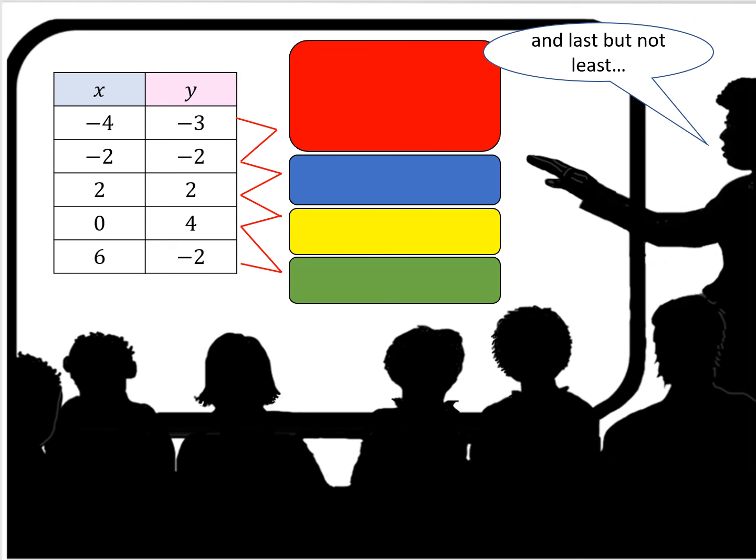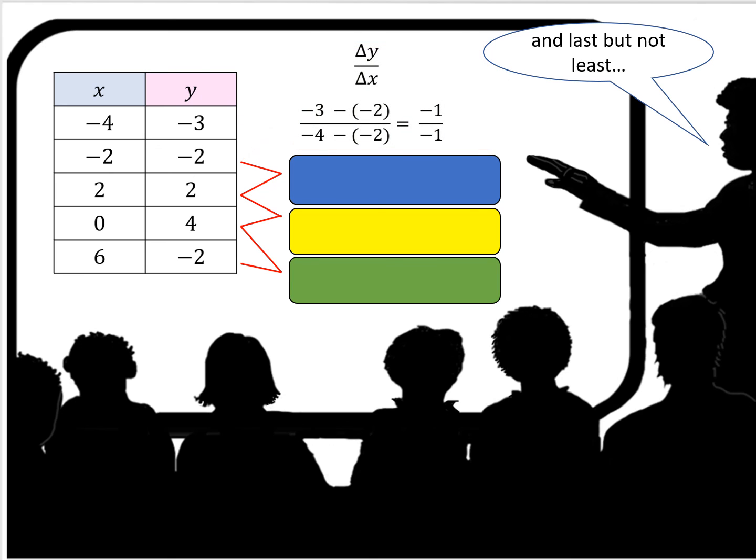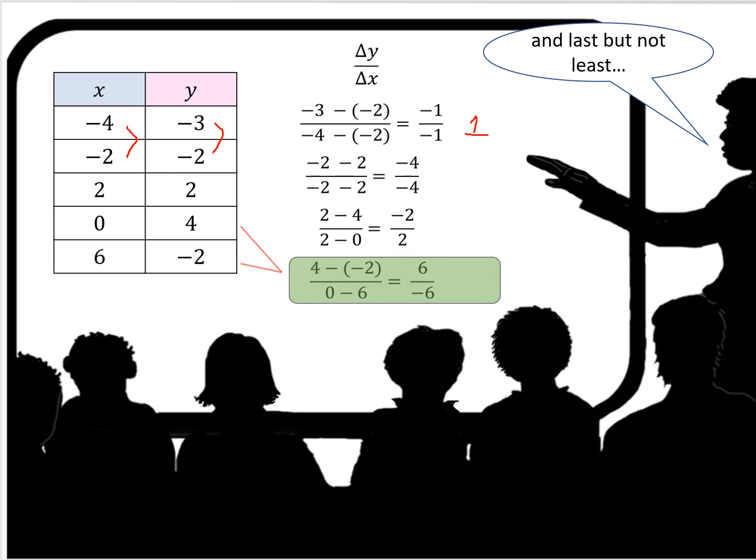And last but not least, let's use that formula for slope again. Minus 3 minus 2 over minus 4 minus 2, I would get minus or plus 1. And this one looks good. Minus 2 minus 2, and minus 2 minus 2, again this equals 1.